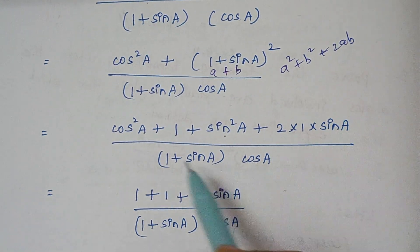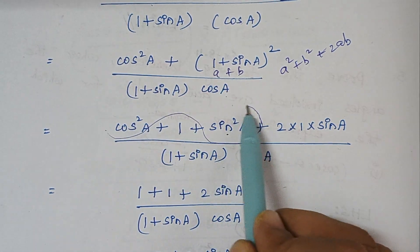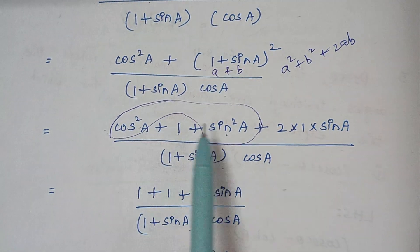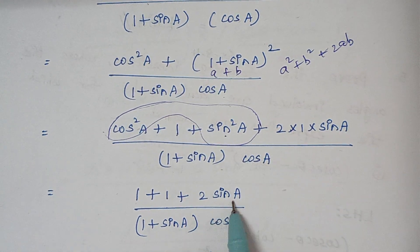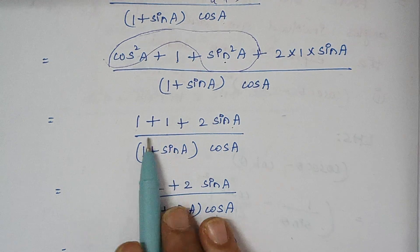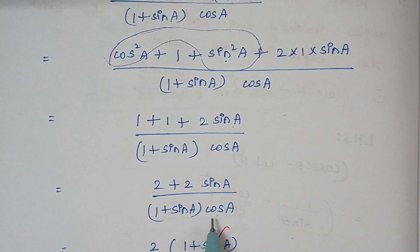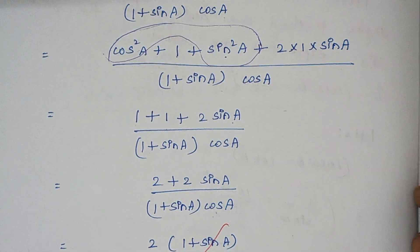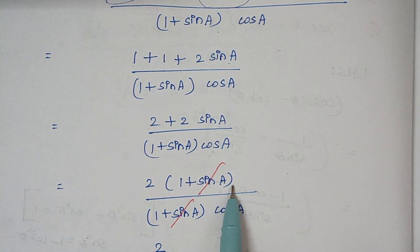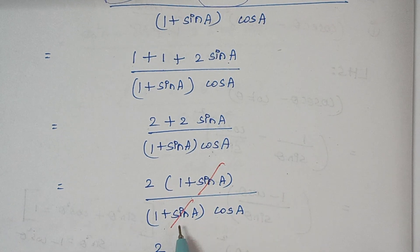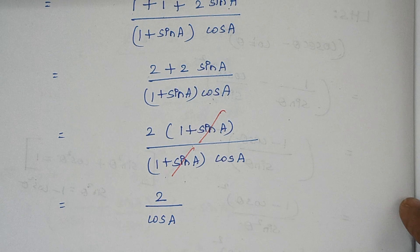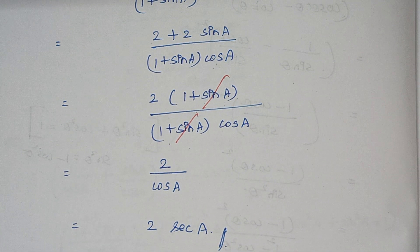Now when you combine cos square a plus sin square a, by the identity that equals 1. So the numerator becomes 1 plus 1 plus 2 sin a, divided by 1 plus sin a into cos a. 1 plus 1 becomes 2, so we have 2 plus 2 sin a divided by 1 plus sin a into cos a. Taking 2 as common from the numerator gives 1 plus sin a. This 1 plus sin a cancels, leaving 2 divided by cos a, which is 2 secant a.